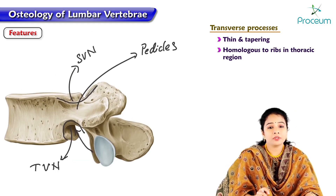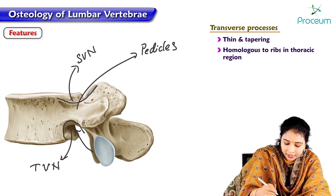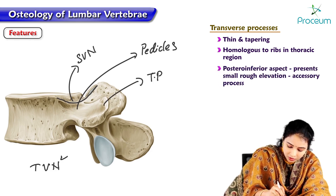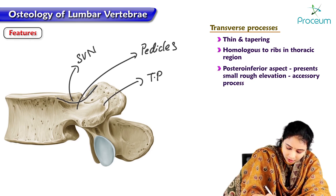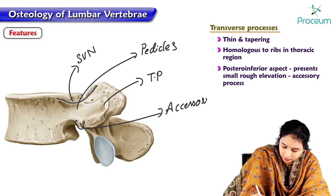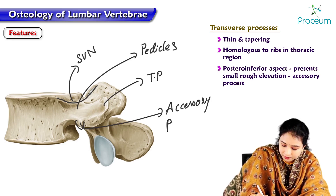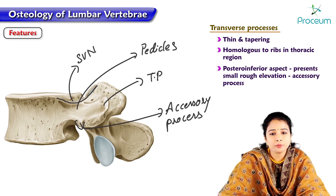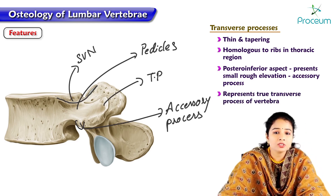We can appreciate the accessory process in the lateral view of the vertebra. On the posterior inferior aspect of the transverse process, the projection is called the accessory process or accessory mammillary process, which represents the true transverse process of the vertebra.